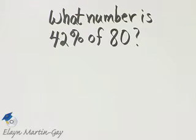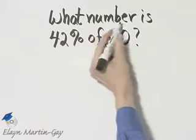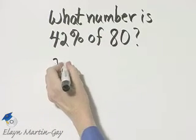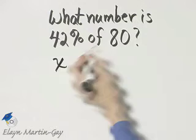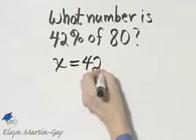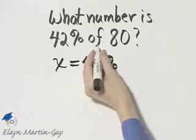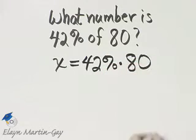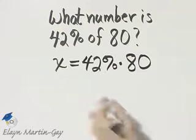Let's now find what number is 42% of 80, and we'll do that by a direct translation equation. What number, we'll let that be our unknown. Is means equals. 42% of means multiplication, times 80. And there is our equation.